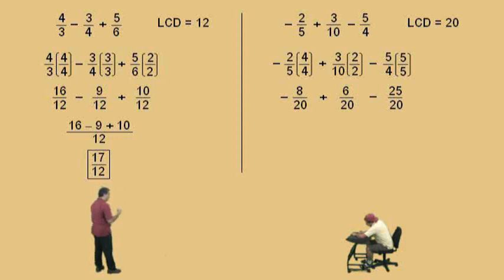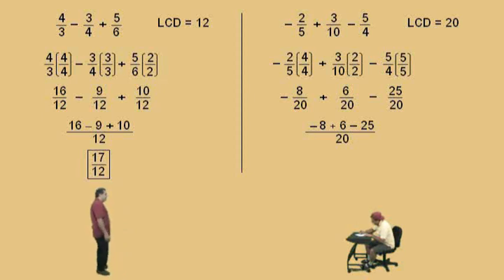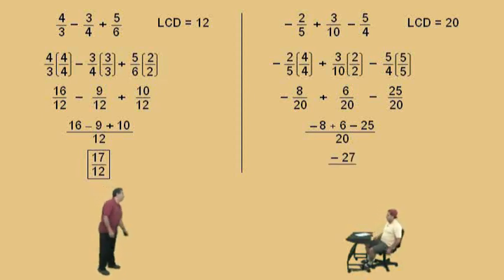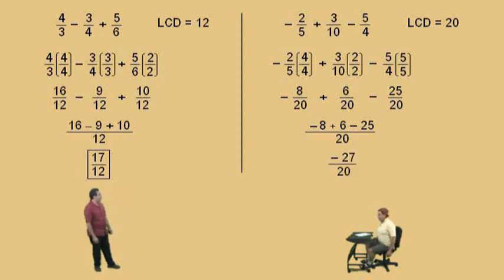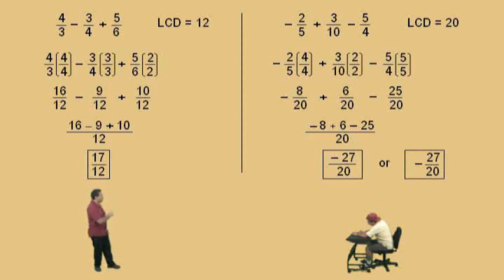Let's work with those numerators. We have negative eight plus six subtract five. The numerator is negative twenty-seven. Negative twenty-seven all over twenty. Don't forget to circle or box your answer. Remember, negative twenty-seven over twenty is a negative number because a negative divided by a positive is negative. Generally, we put the negative in front and say negative twenty-seven over twenty. It's the same answer.